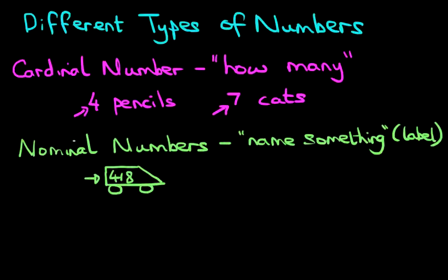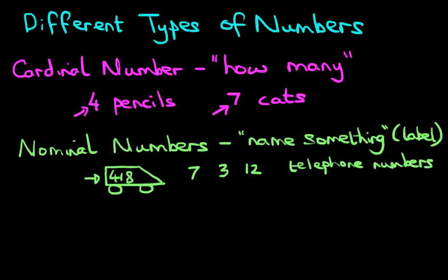What else can you have as a nominal number? Well, suppose you see someone playing football, netball, or cricket. At the back of their shirts, they will have a number — it could be 7, 3, or 12. Those are nominal numbers on the back of shirts of people who play sports. You can also have telephone numbers. For example, if you want to call somebody in London, you'd dial that number — and that number is a nominal number, because it's naming somebody's phone number.